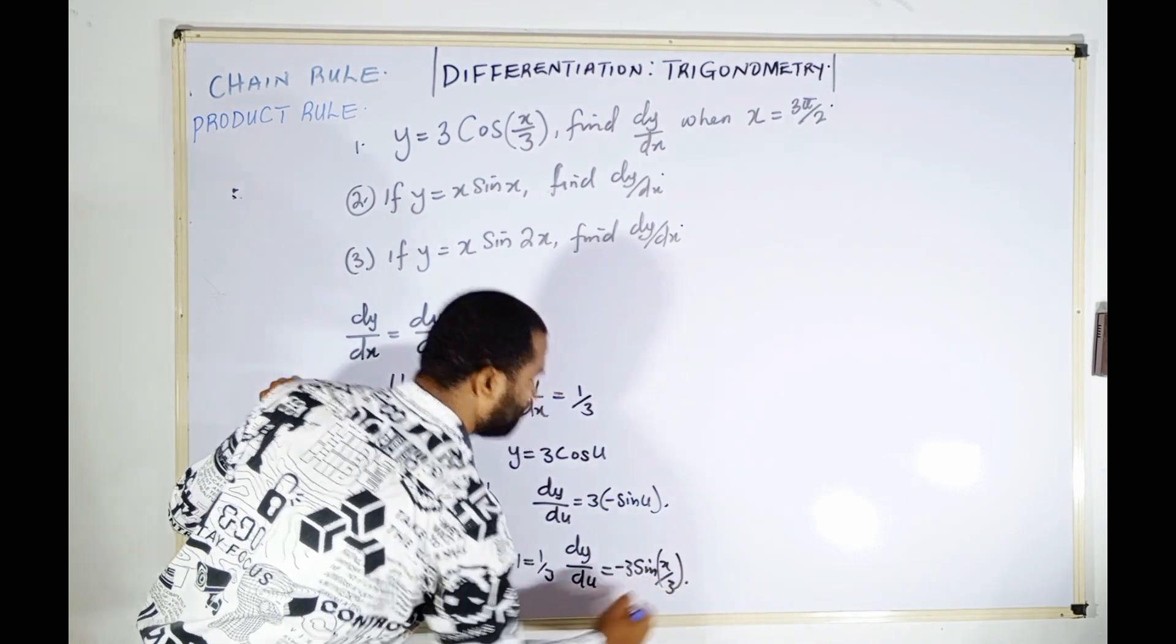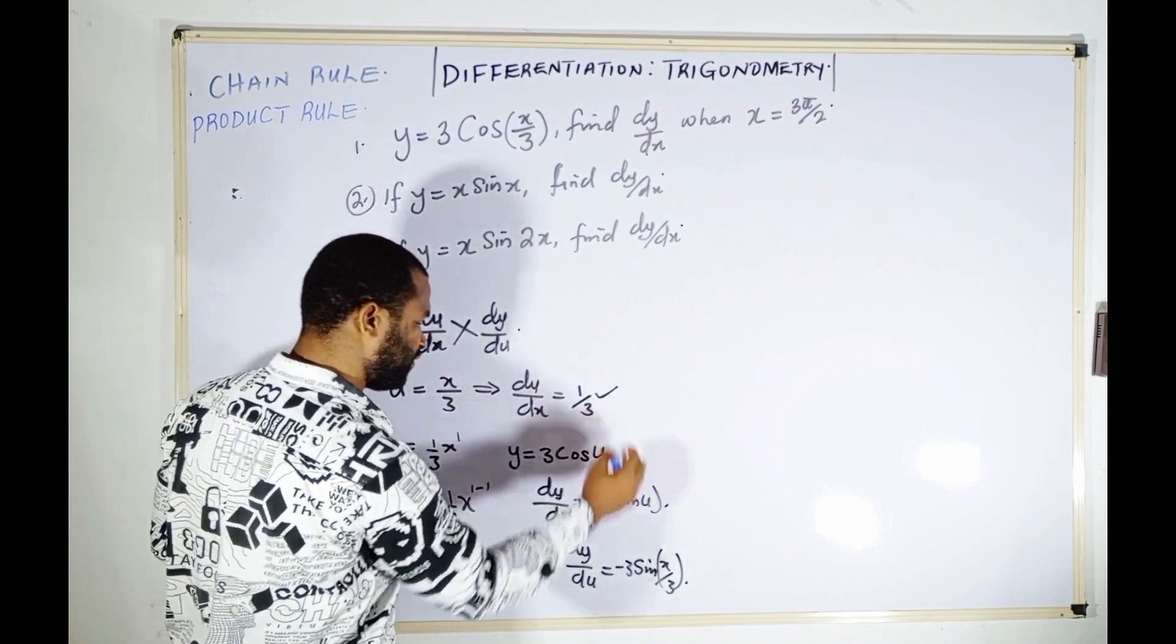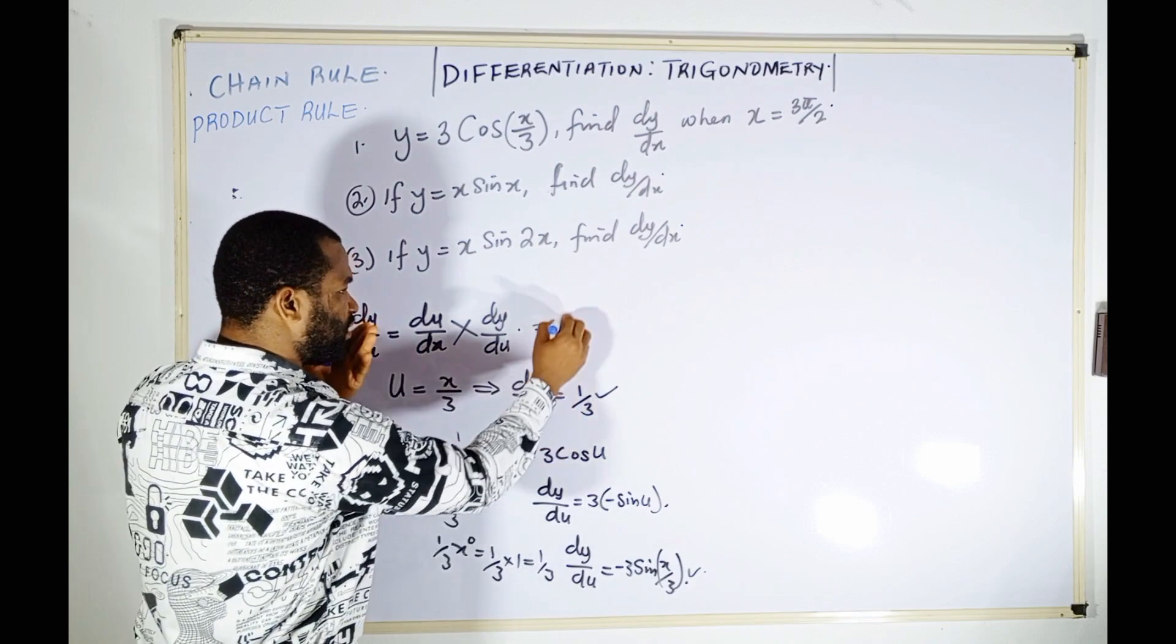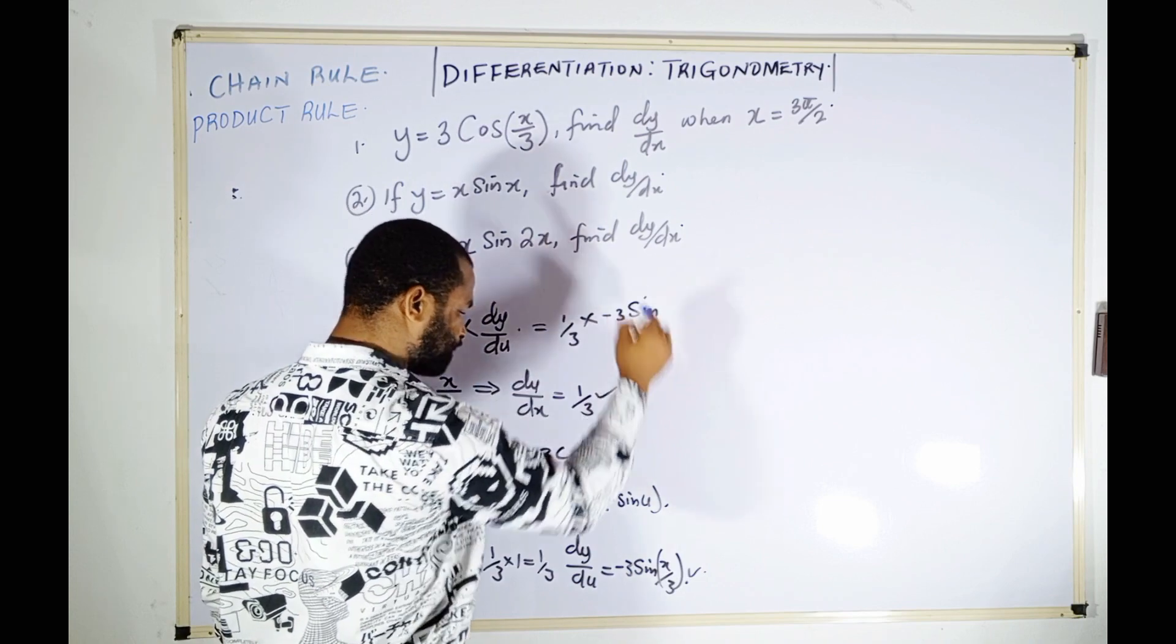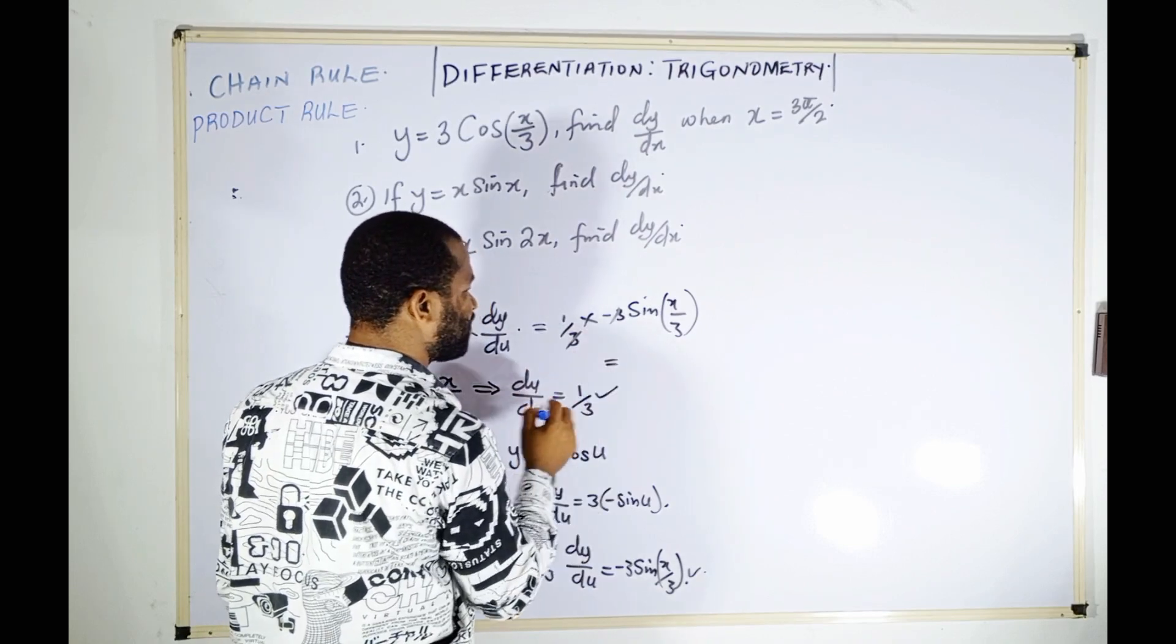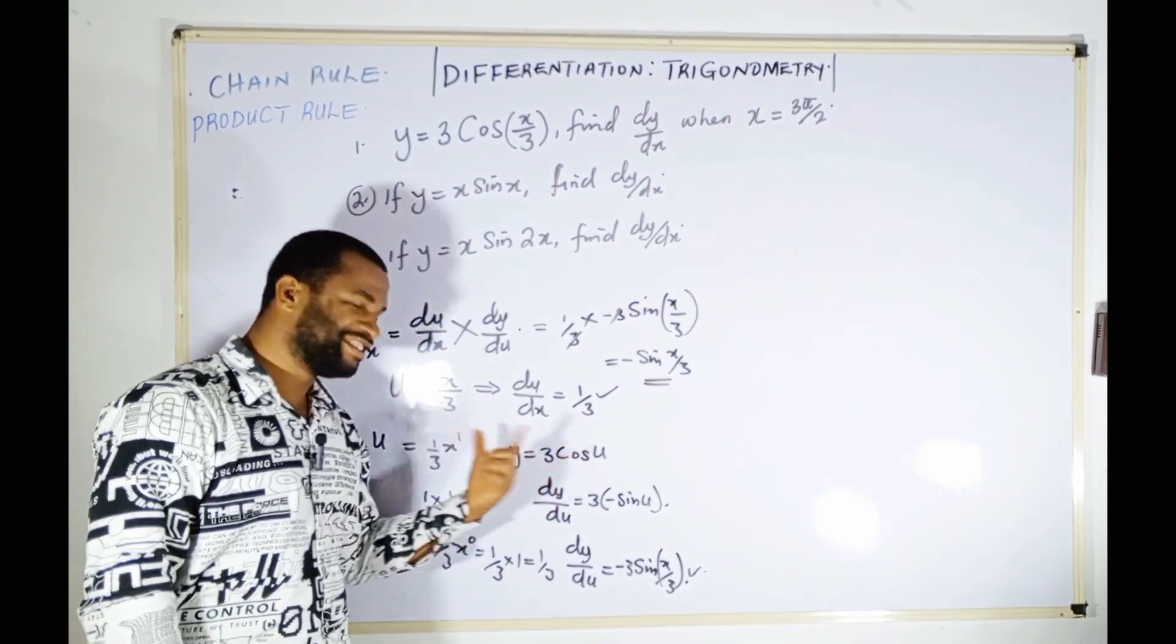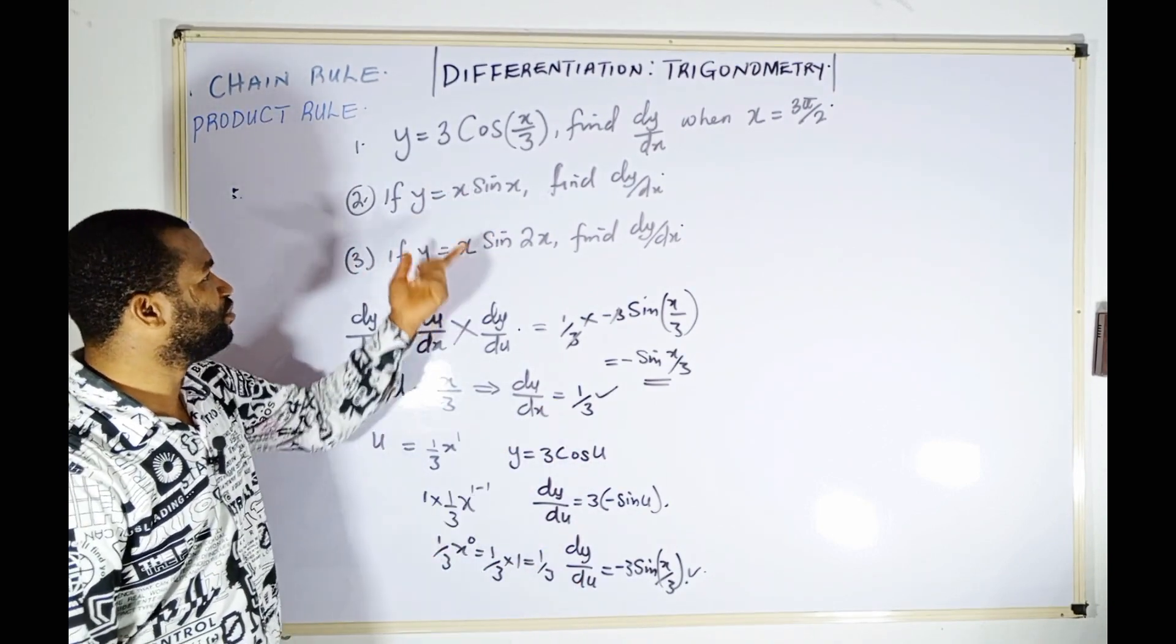Applying the chain rule: dy/dx = (1/3) × (-3sin(x/3)). The 3s cancel, so the final answer is -sin(x/3). This is really special and enjoyable! Let's go to number two.